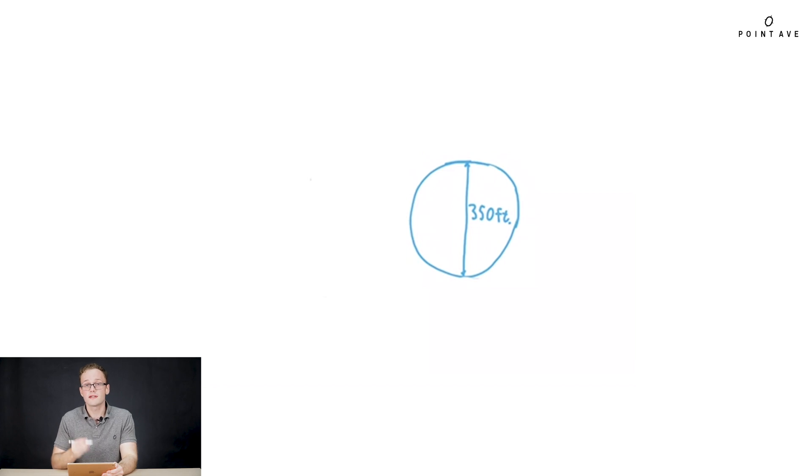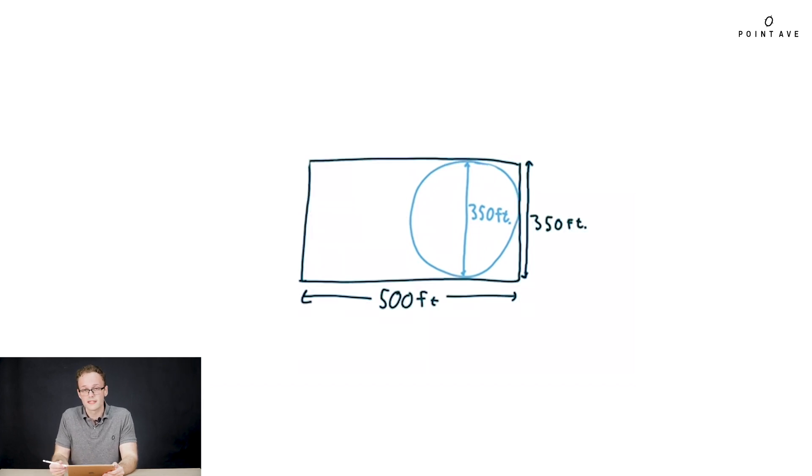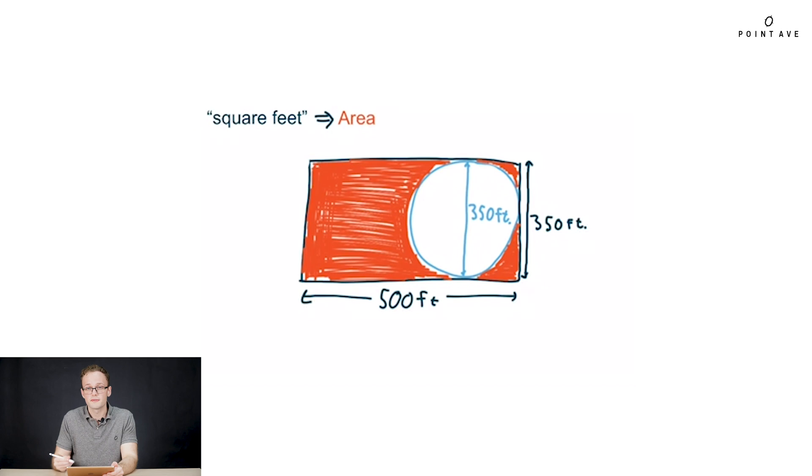We should always start by drawing a diagram. So to start, we have the old baseball field here, 350 feet in diameter circle. Next, we want to add on top of it the football field, 350 feet by 500 feet. So we just draw it on top. Now, what are we actually looking for? We're looking for the new area to extend the field. Another hint there is the mention of square feet in the question, which is a unit of area. And what area are we looking for specifically? Let's draw it into our diagram. It's all of the new turf, like we see here.